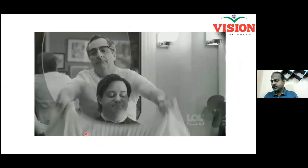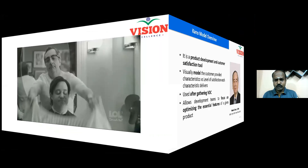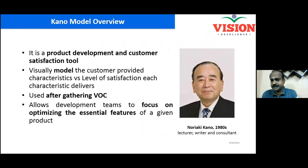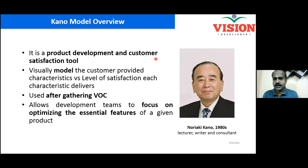The key point of this discussion is that identifying the right CTQ is very important. If you don't identify the CTQ, or wrongly identify it, the same problem can happen with your products and services. Whatever your customer wants should be expressed in terms of CTQs. A single product can have 100 CTQs, and your product should deliver all of them.